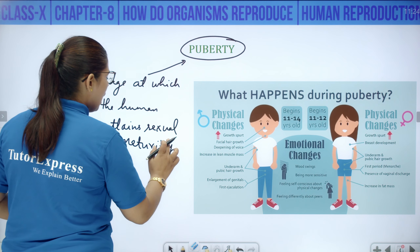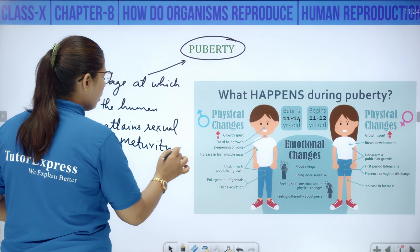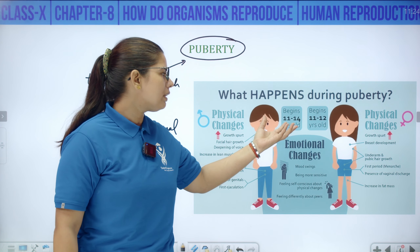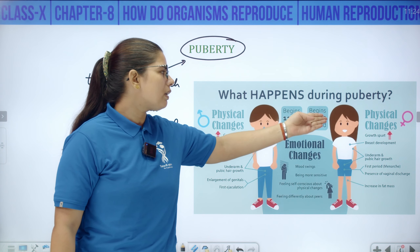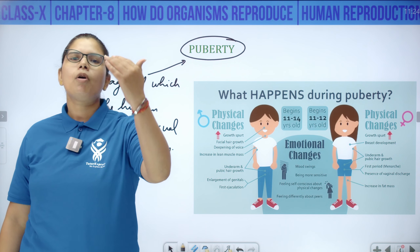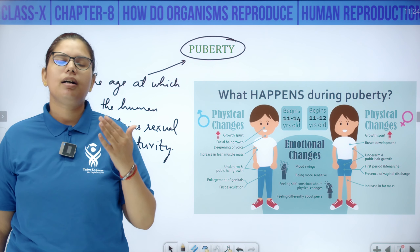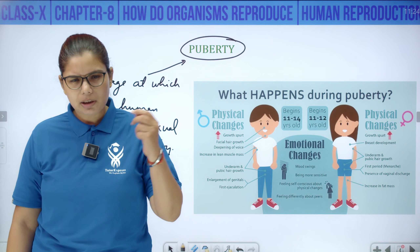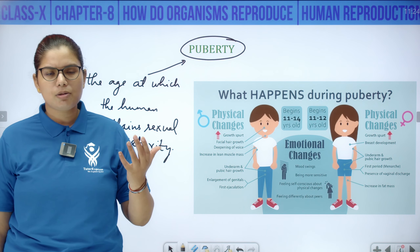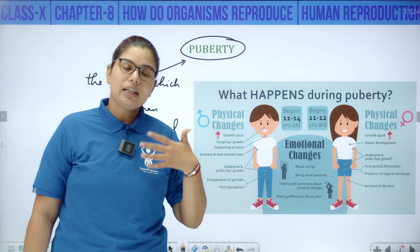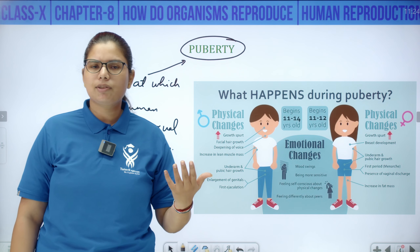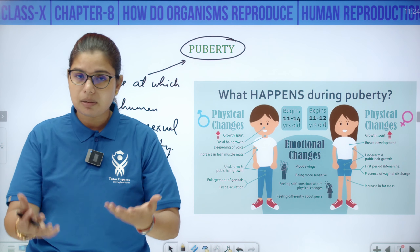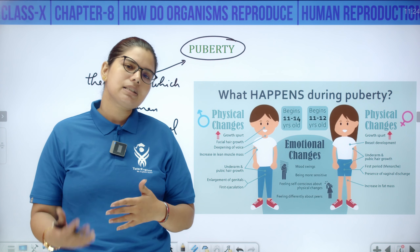Generally, this is a period between 11 to 14 years in boys and 11 to 12 years in girls. As boys cross their young age and enter the teenage, this period is also called the adolescent period. During this time, a lot of changes occur — physical changes, emotional changes, and behavioral changes — which we have all experienced during our growing-up years.